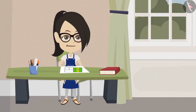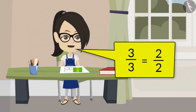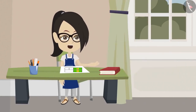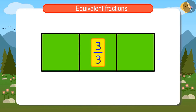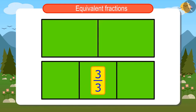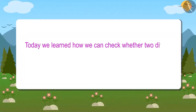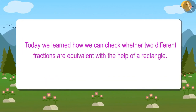Just like this, we also know that 3 upon 3 and 2 upon 2 are equal. We should check the equivalence of these two fractions following the same way. For 3 upon 3, I divide this rectangle into 3 equal parts — 3 of these 3 parts represent 3 upon 3. To show 2 upon 2, I make 2 equal parts of this rectangle — these two parts show 2 upon 2. Looking at these two, we see that 2 upon 2 and 3 upon 3 are equivalent because both are showing the same quantities. Today, we learned how with the help of a rectangle, you can check whether fractions are equivalent or not.